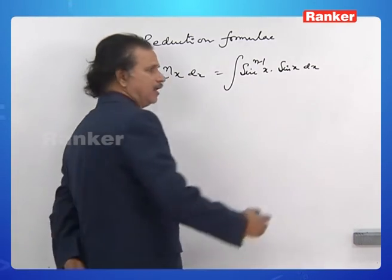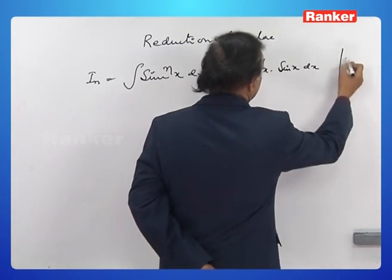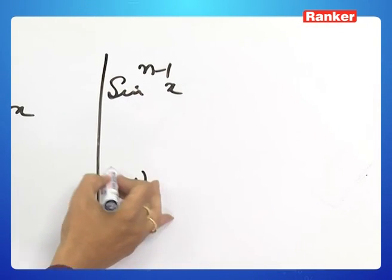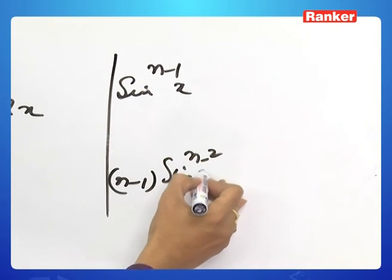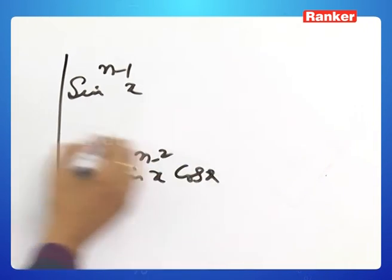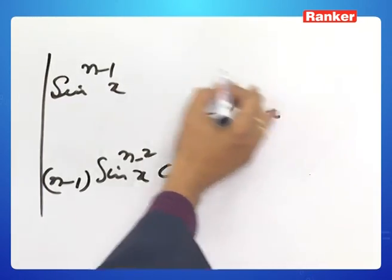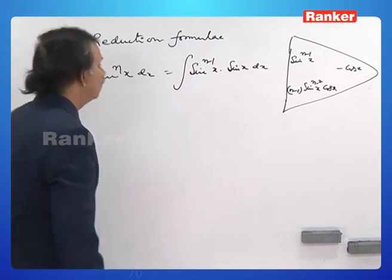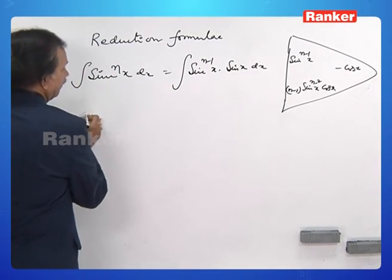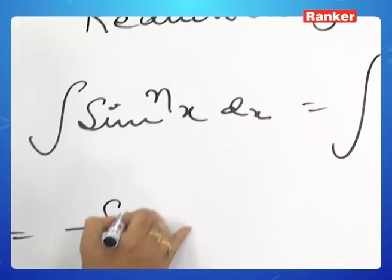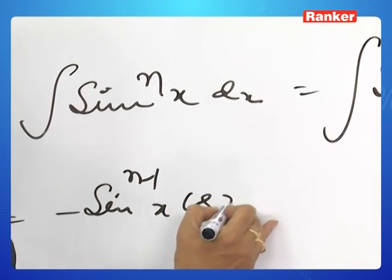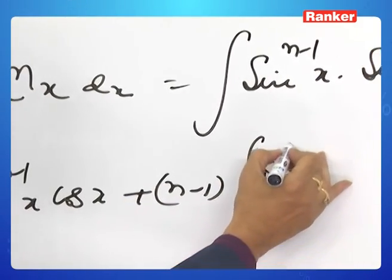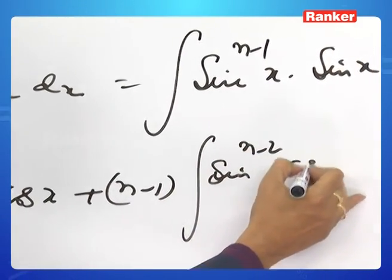As usual, let us use the triangular pattern. We have sin^(n-1)x, and its derivative is (n-1)·sin^(n-2)x·cos x. The integral of sin x is minus cos x. So the integral becomes minus sin^(n-1)x·cos x minus (n-1) into integral of sin^(n-2)x·cos²x.